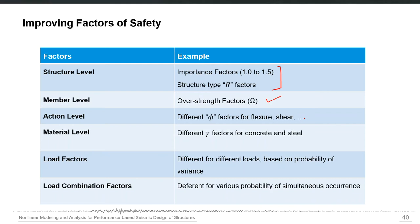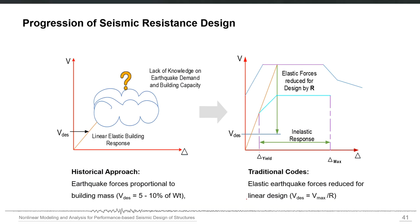At member level there may be specific safety factors, and at the action level — flexure, shear, torsion — there are different safety factors. Material level has its own, and on the load side you have load factors plus load combination factors that account for the probability of simultaneous occurrence of different loads. If loads can occur simultaneously the combination factor is high; if two loads very rarely occur simultaneously the factor is very low.